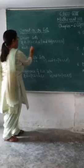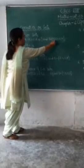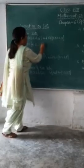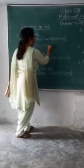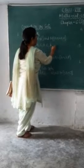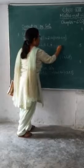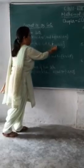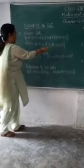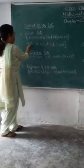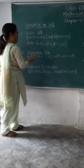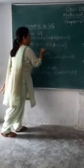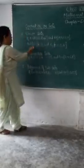A union B is the set in which all the elements of A and B are included. For example, if set A has elements A, B, C, D, E and set B has elements F, I, O, U, then A union B contains all these elements: A, B, C, D, E, F, I, O, U. This means all elements which belong to either set A or set B or both are in A union B.